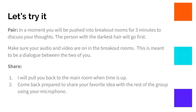In a moment, you'll be pushed into a breakout room by your host for three minutes to discuss your thoughts with a partner. The person with the darkest hair will go first. Please make sure your audio and video are on in the breakout rooms. This is meant to be a dialogue between the two of you, and if you cannot see and hear each other, it's not going to work. When you come back, be prepared to be pulled into the main room when the time is up — there's nothing that you need to do on your end. Come back prepared to share your favorite idea with the rest of the group using your microphone. In a moment you're going to be pushed out — go. Please pause the video.